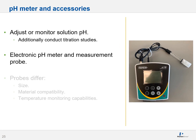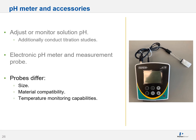Then you have pH meters, which are used to adjust or monitor solution pH. Depending upon your lab environment, they may also be used for titration studies. An electronic pH meter comes with a measurement probe — the meter is just a collection and translation device. You need a probe, as shown on the right-hand side, for the pH meter to function. Probes can differ based on size, material compatibility, and built-in automated temperature monitoring. Importantly, probes should not be stored in air — once done using your probe, place it in a vial or bottle of buffer made to manufacturer specifications. Do not let them dry out, as it usually fatally damages the probe.